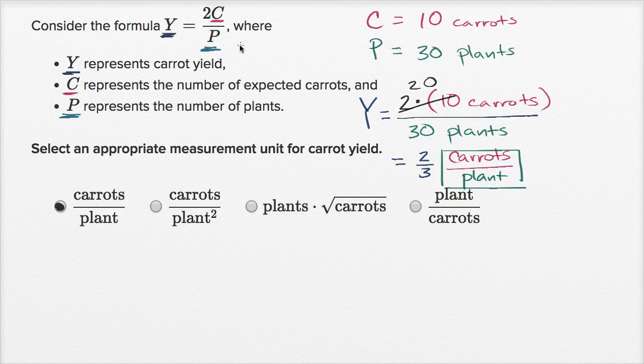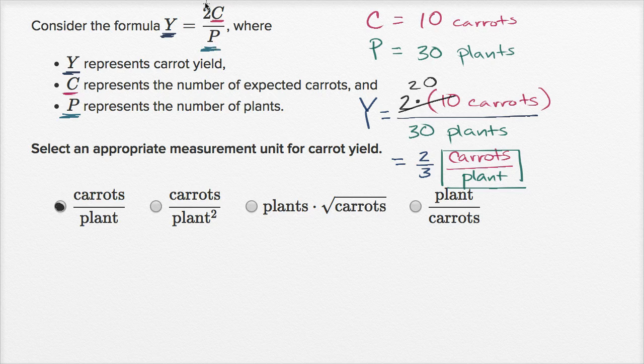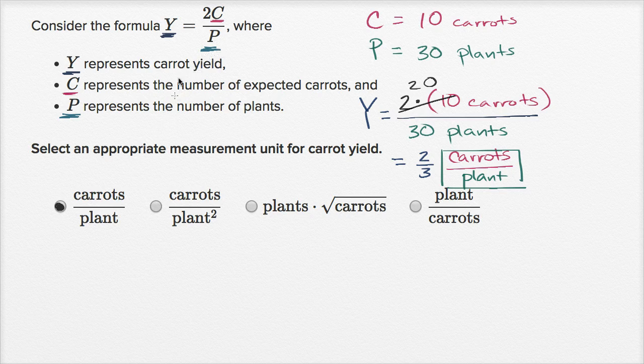But the general theme that you could see is this constant, this two didn't affect what happens to the units. But what did matter is how these variables relate to each other. We're taking the variable C, dividing it by P. So whatever the units were for C, we divide those units by the units for P and we get the units for yield. Carats per plant.